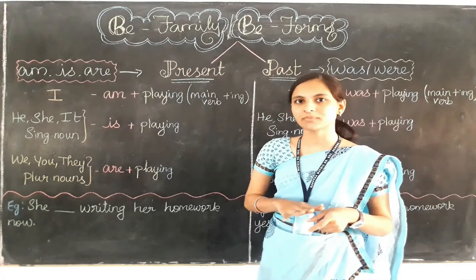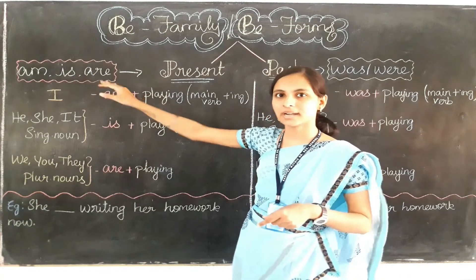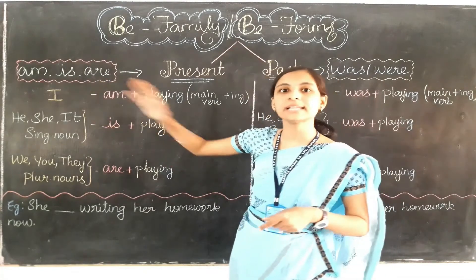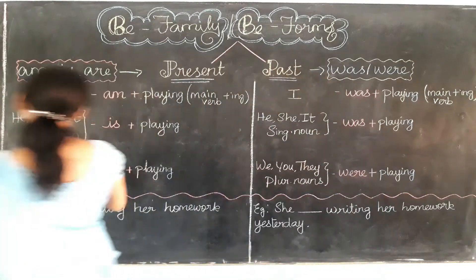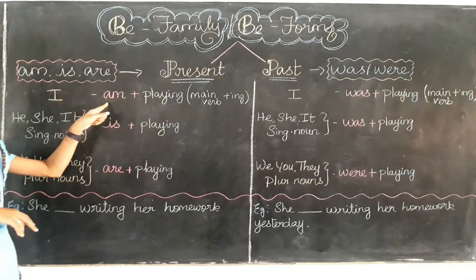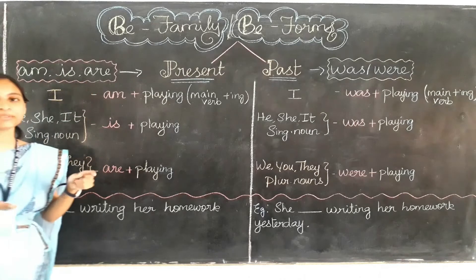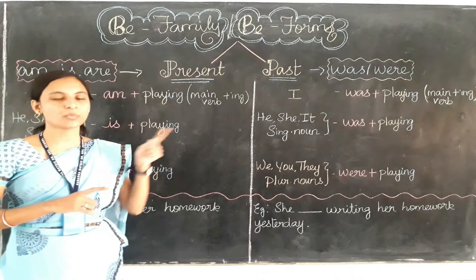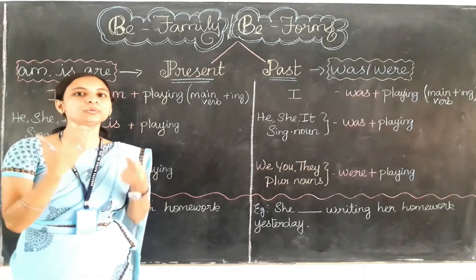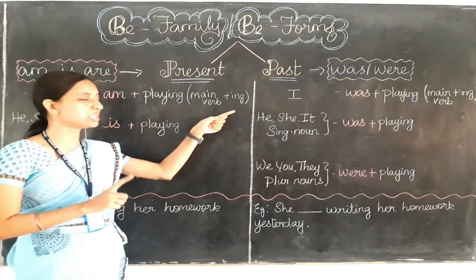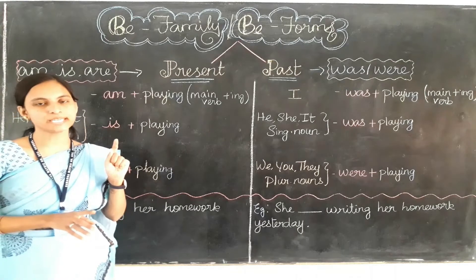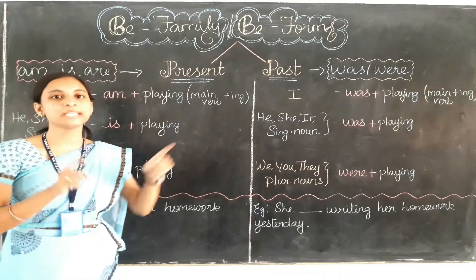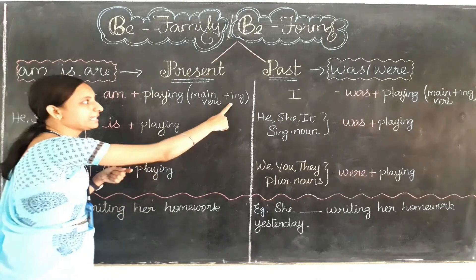So present time verbs are am, is, are. Now let's learn for which subjects we need to use am, is, and are. When we are using B form verbs in a sentence, we need to add -ing to the main verb. The main verb is an action verb. So remember: whenever you are using B form verbs — that is am, is, are, or was, were — in a sentence, you need to add -ing to the main verb.